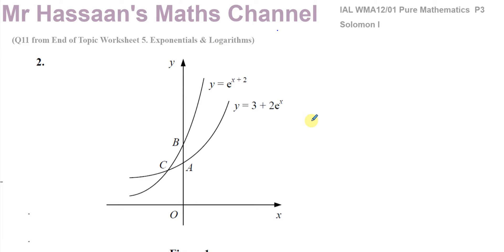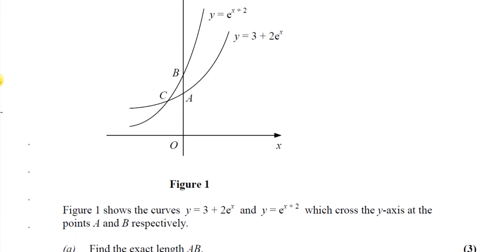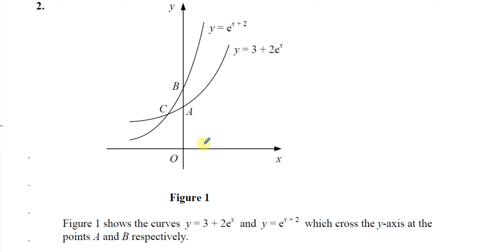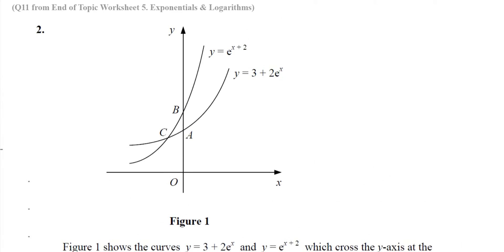I was requested by one of my students to answer part B of this question, but I'll just go through the whole thing. In question number 2, you're given sketches of two graphs: y equals e to the power of x plus 2, and y equals 3 plus 2e to the power of x. We're told they cross the y-axis at points A and B respectively, and we need to find the exact length AB.